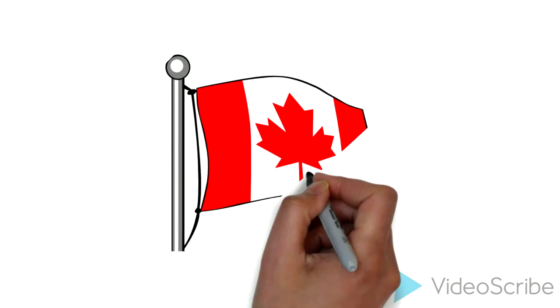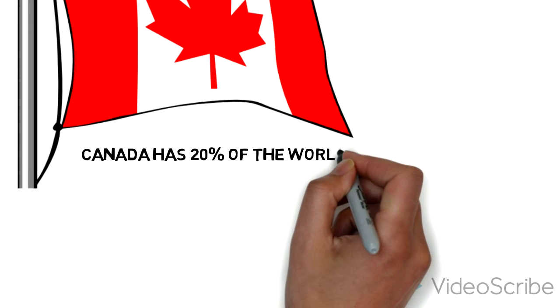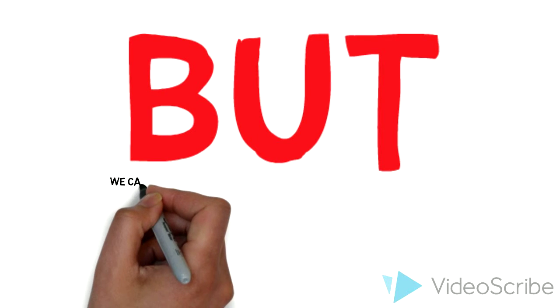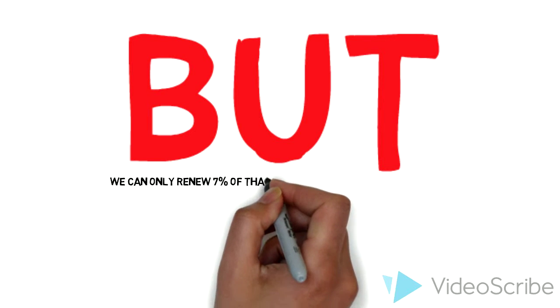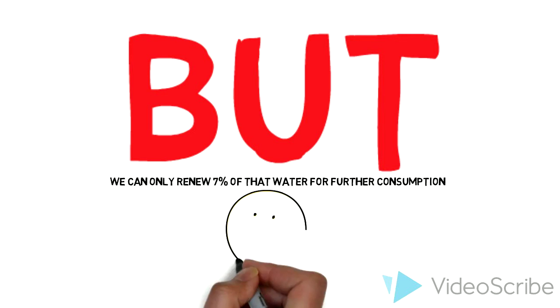Canada is lucky enough to hold 20% of this fresh water within our own borders. But we aren't being careful with it. Only 7% of this water within our borders is renewable, and we don't seem to be aware of how quickly it is disappearing.